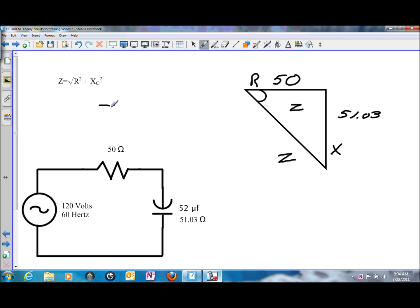The formula is Z equals the square root of R squared plus Xc squared. Plugging in the appropriate numbers, we have 50 ohms of resistance squared plus 51.03 ohms of capacitive reactance squared. The square root of that gives us an impedance of 71.44 ohms for this specific circuit.